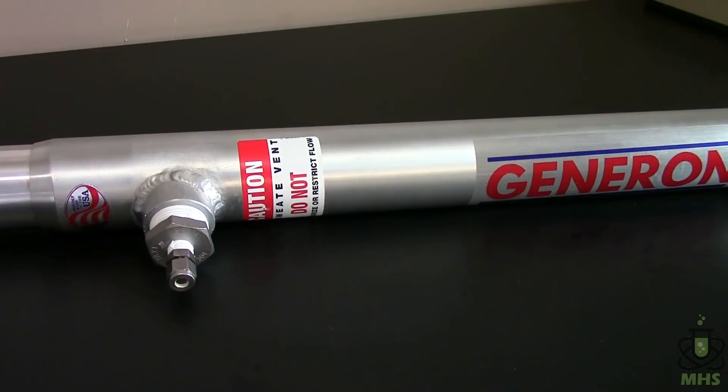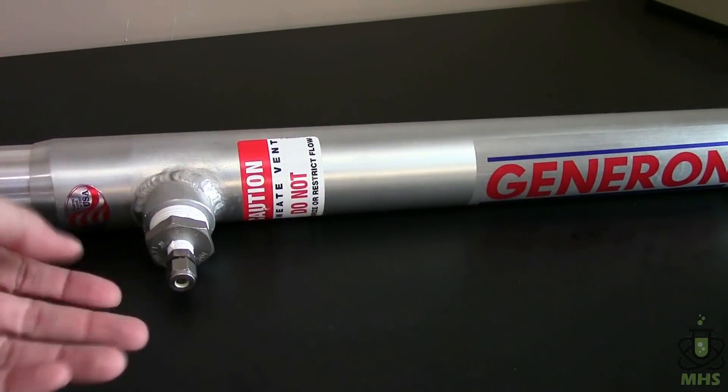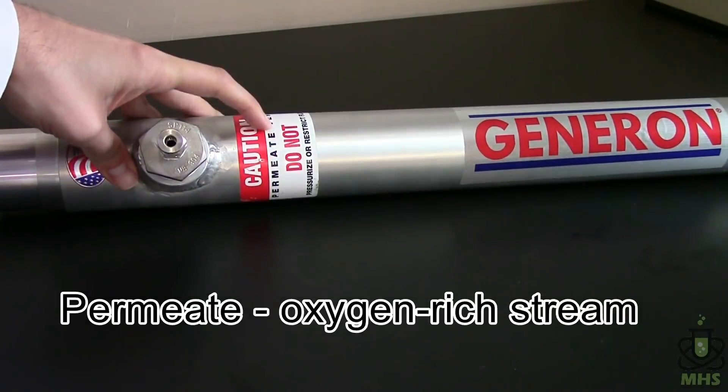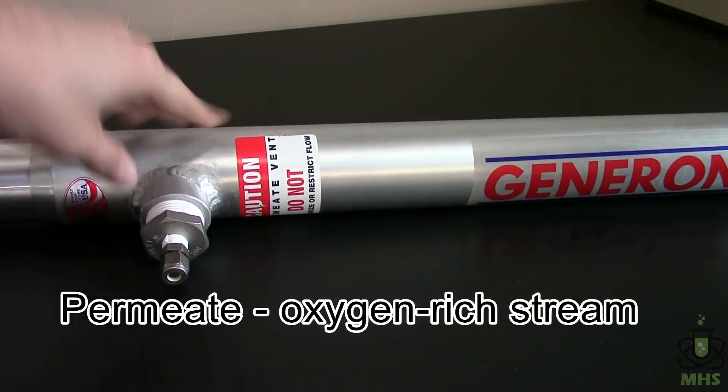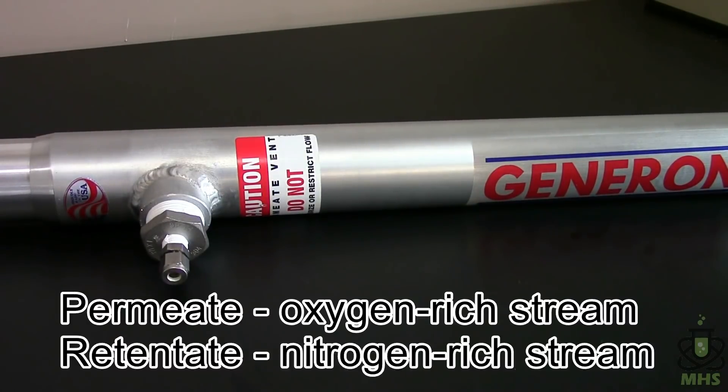The two streams of gases that this separates the air into have two different names. The stream that permeates through the fibers and comes out this sidewall here is called the permeate stream. And you can see it's written on here this is the permeate vent. The other stream that continues on through it that is retained inside the fibers is called the retentate stream and that's going to be your purified nitrogen gas that comes out the other end.